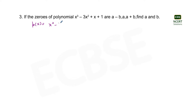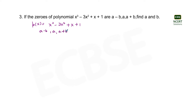The three zeros of this polynomial p(x) are a minus b, a, and a plus b. What we have been asked in the question is to find the value of a and b.